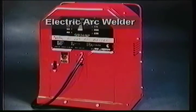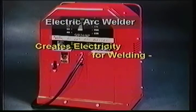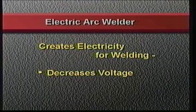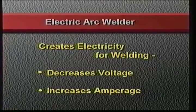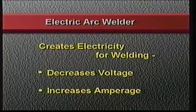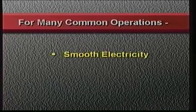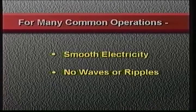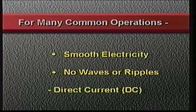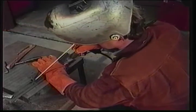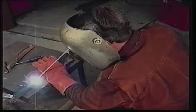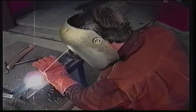We use an arc welder to create the kind of electricity we desire for welding. The welder decreases the voltage of the power source while simultaneously increasing the amperage. In addition, for many common arc welding operations, we want very smooth electricity with no waves or ripples, so we need direct current DC electricity. We can weld using alternating current too, but we'll focus on how DC arc welding technology works.